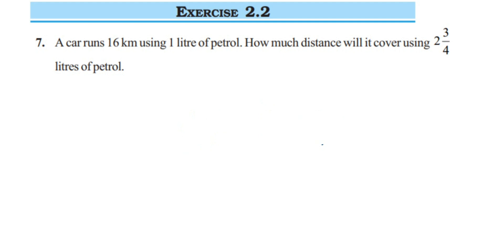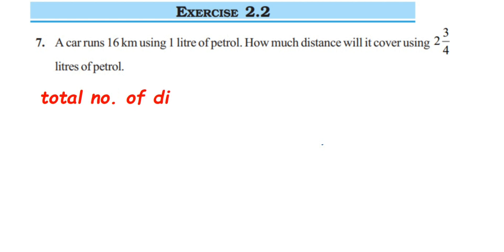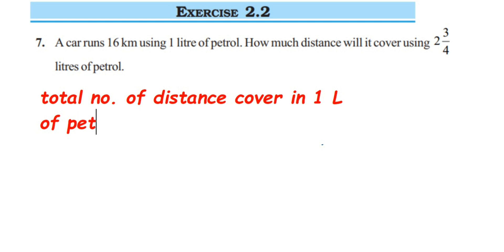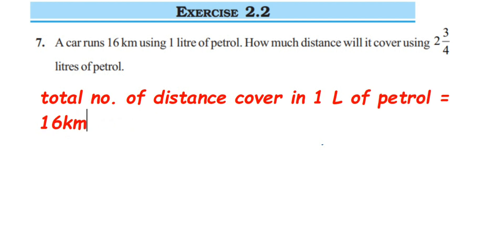Let us write down what we know from the question. The total distance covered in one liter of petrol is equal to 16 kilometers. Next, we have to find out for two and three-quarters liters of petrol.